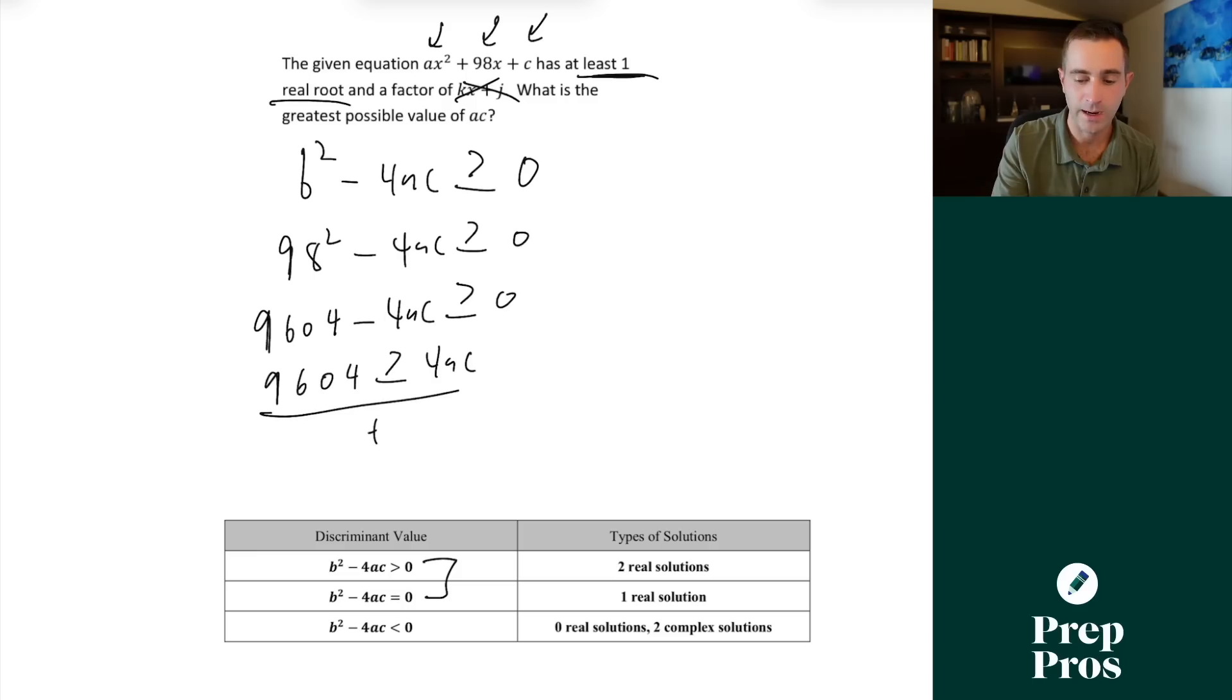Now we can just divide everything by four. And when we do so, we'll get 2401 is greater than or equal to ac. So if we're looking for the greatest possible value of ac, that's going to be when it's equal to the 2401. And so that's going to give us our correct answer of 2401 here.